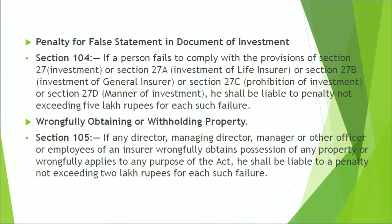Wrongfully obtaining or withdrawing property is pertinent to managerial employees. Under Section 105, if any director, managing director, manager, or any other employee of an insurer wrongfully obtains possession of any property or wrongfully applies it to any purpose, then he shall be liable to a penalty not exceeding 2 lakh rupees for each such failure. These are fines imposed for non-adherence to these laws. The penalty for failure to comply with Section 32B, which relates to insurance business in rural and social sector, is pertinent to Section 105B.